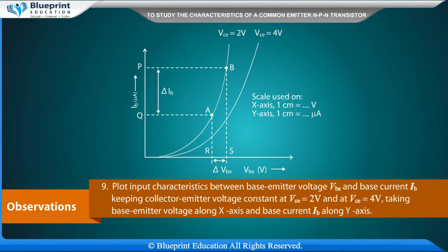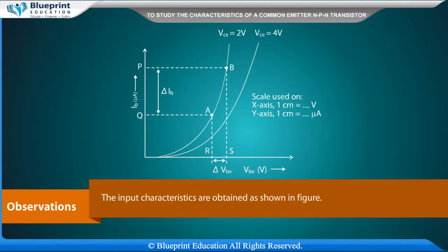Plot input characteristics between base emitter voltage VBE and base current IB, keeping collector emitter voltage constant at VCE equal to 2 volt and at VCE equal to 4 volt, taking base emitter voltage along X-axis and base current IB along Y-axis. The input characteristics are obtained as shown in figure 3.